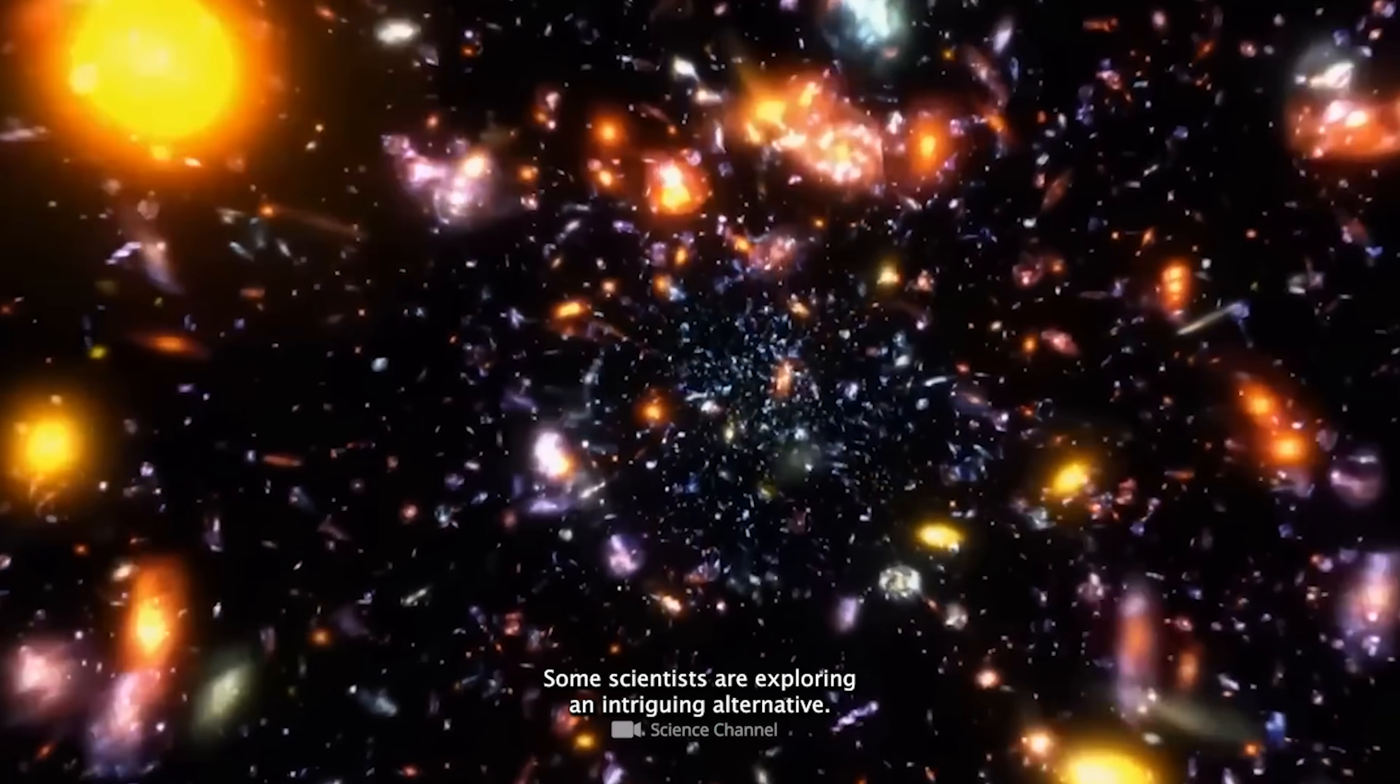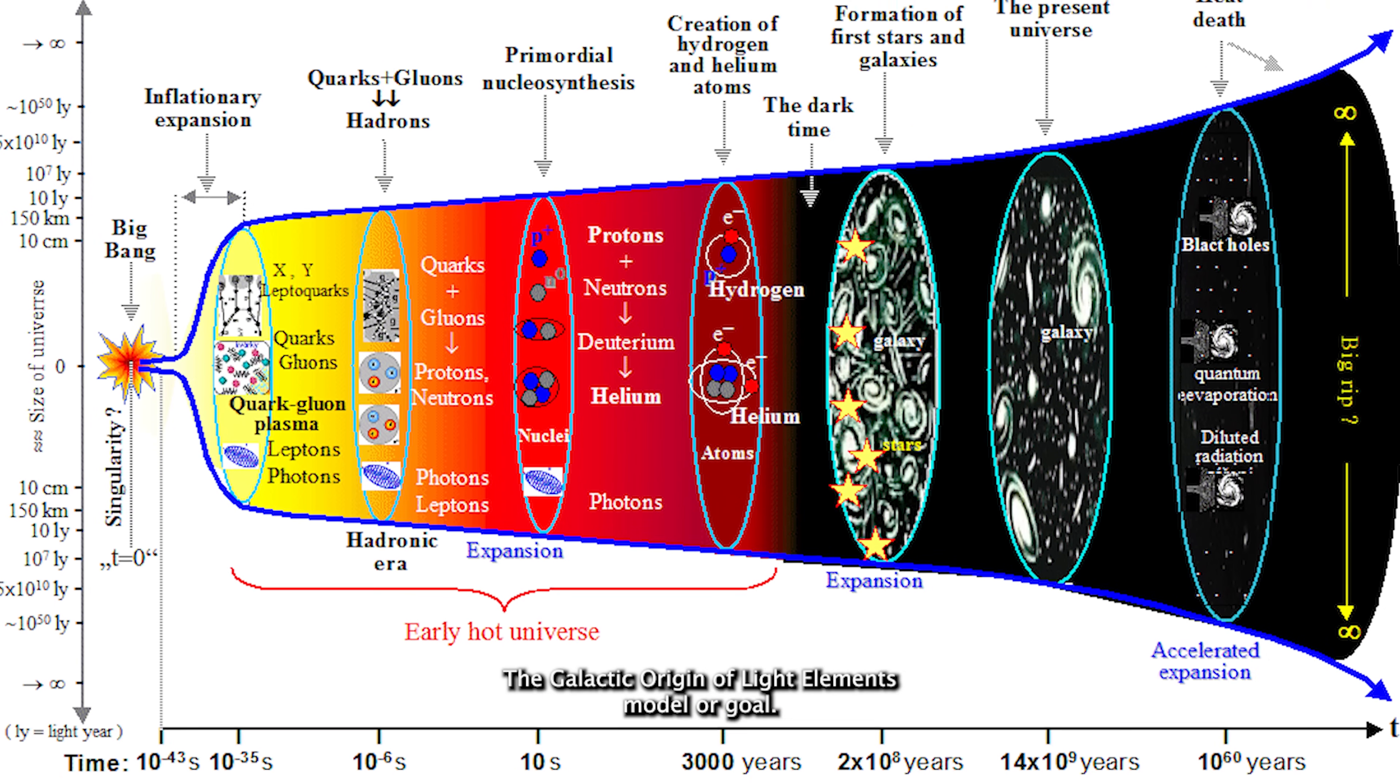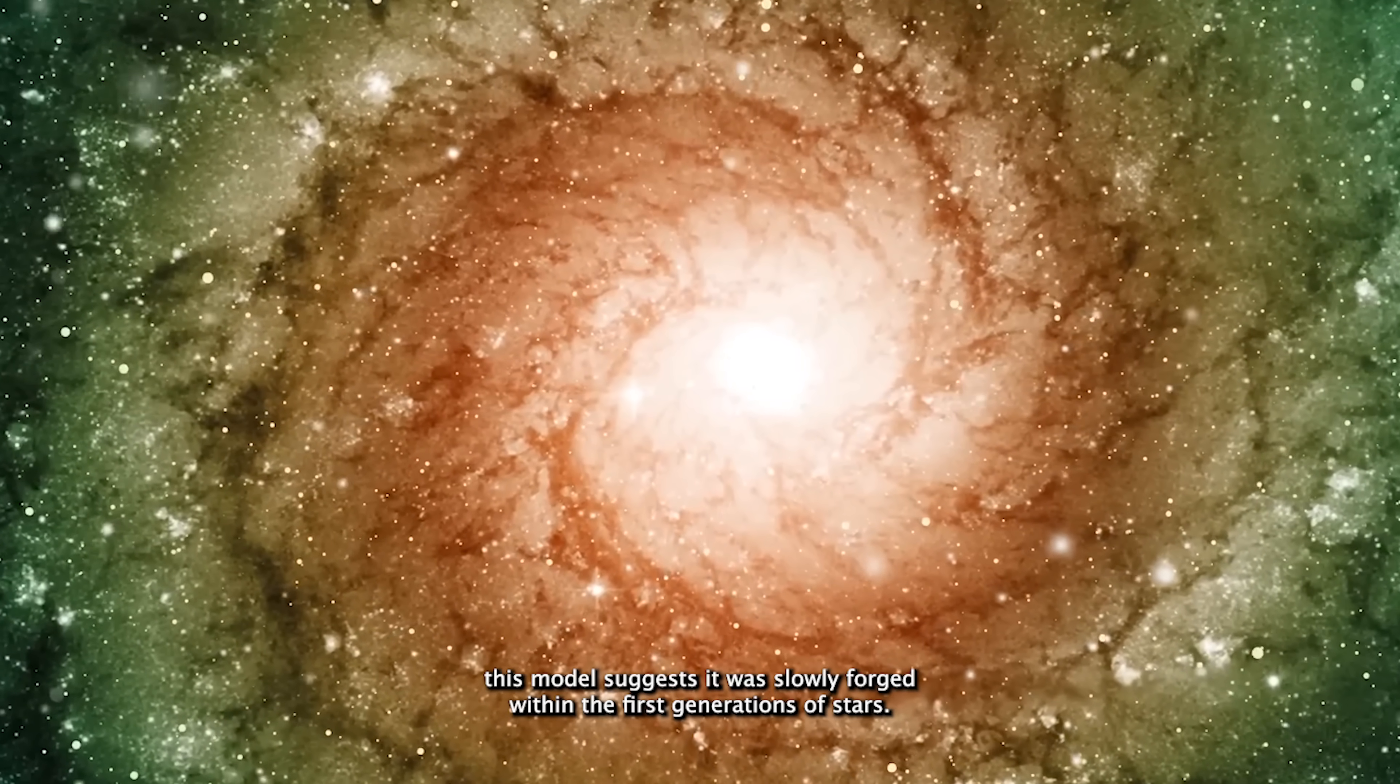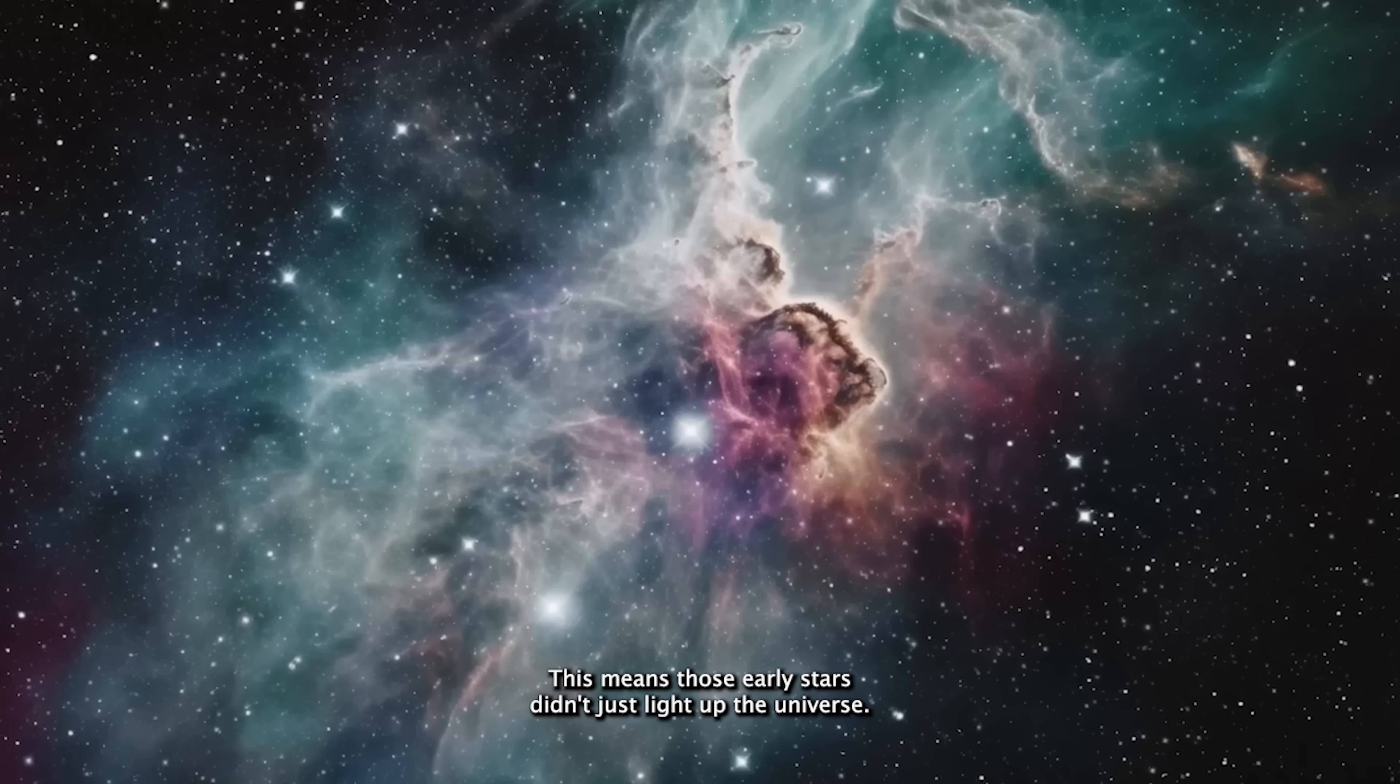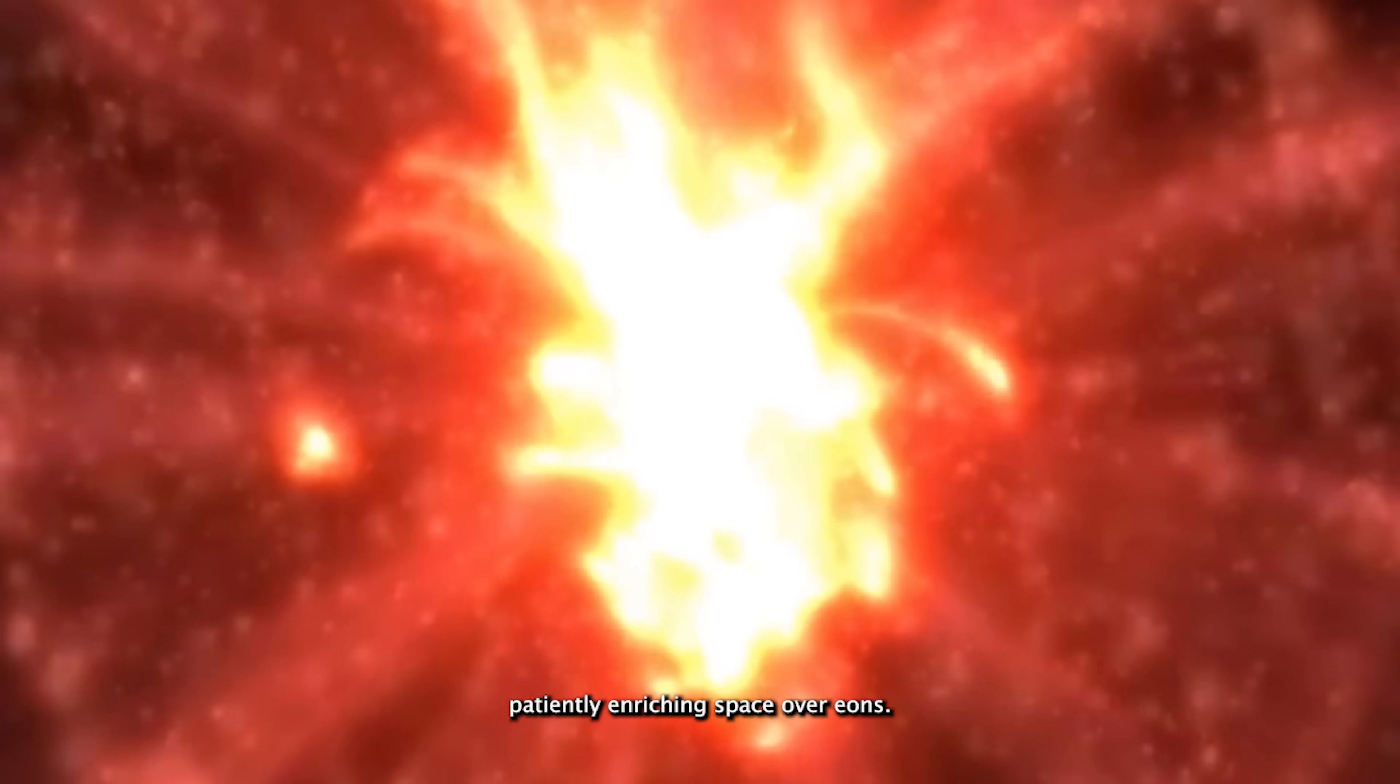Some scientists are exploring an intriguing alternative, the Galactic Origin of Light Elements model, or GOAL. Instead of lithium forming in the initial cosmic fireball, this model suggests it was slowly forged within the first generations of stars, over millions of years. This means those early stars didn't just light up the universe. They also sowed the seeds for life's building blocks, patiently enriching space over eons.